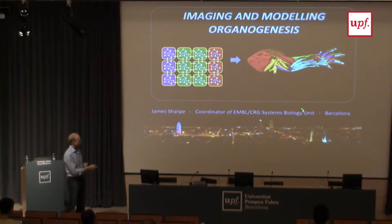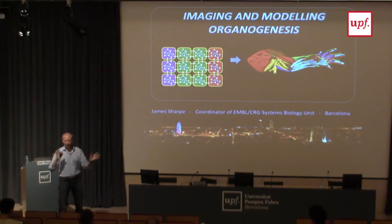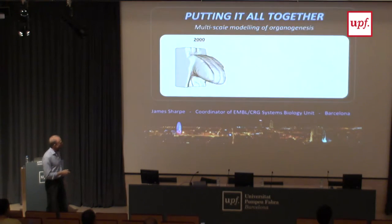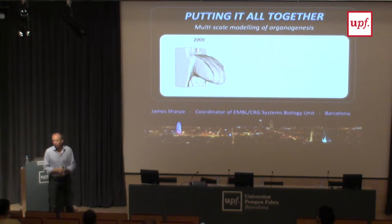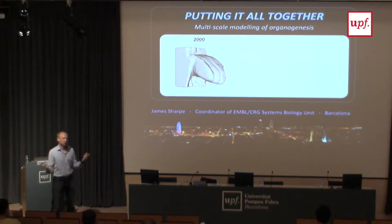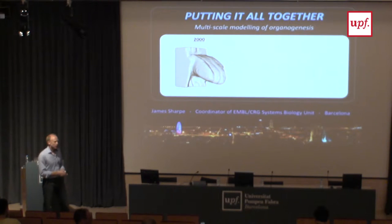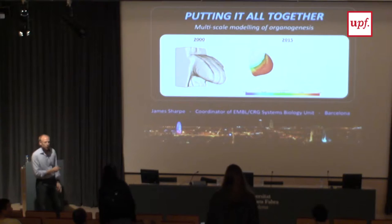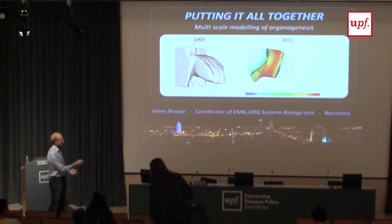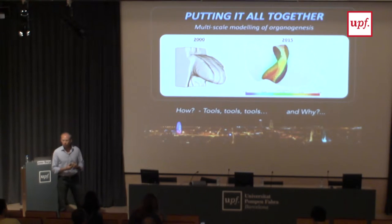I'm coordinating a systems biology unit, so this is one version of what we think of as systems biology - in particular the integration between data and modeling. What I'm going to do is try to summarize the journey that we've been on over nearly 15 years. I'm not going to go into lots of detail, but I will cover quite a lot since this is a school and the more you see the more useful it is. It's a journey from a very crude attempt to build a model of limb development up to what we have now, involving building imaging tools and computational tools.